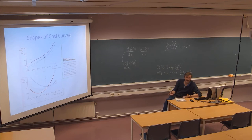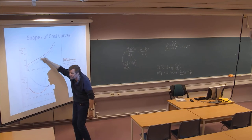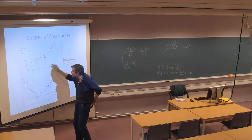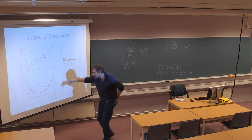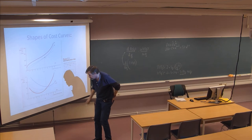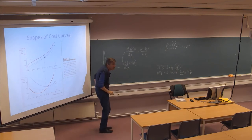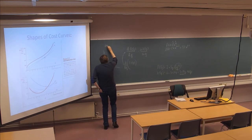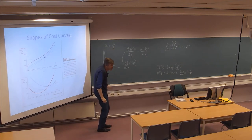Looking at the graphical shapes: total cost is constructed by taking fixed cost as a horizontal straight line and lifting the variable cost curve up by that amount. In the lower diagram, marginal cost is shown in red, along with average total cost, average variable cost, and average fixed cost. Average fixed cost always forms a hyperbola because it is a constant divided by Q.